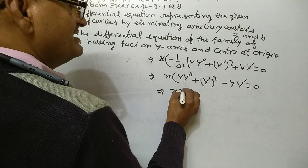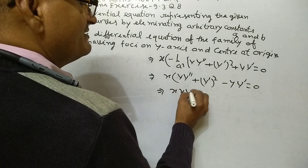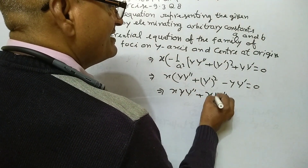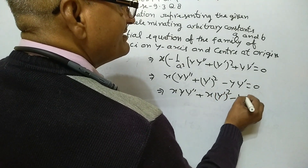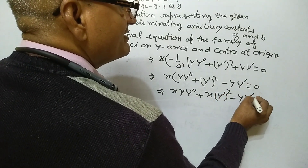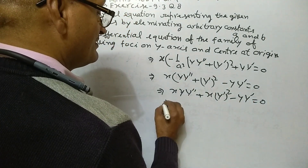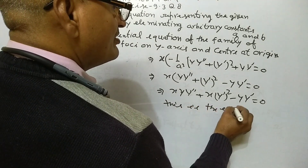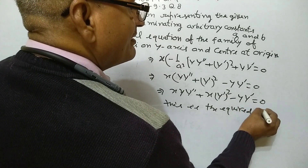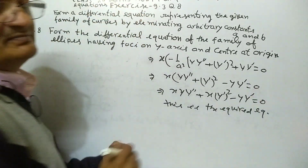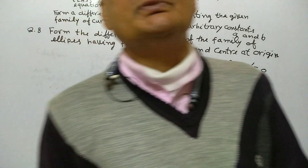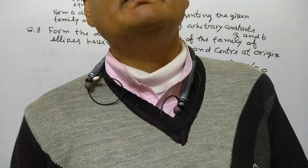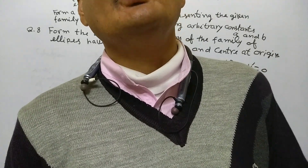This gives us x·y·y'' + x·(y')² - y·y' = 0, which is the required differential equation. Thank you class.